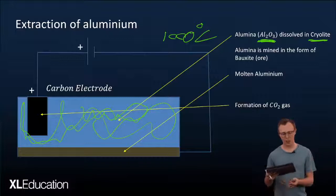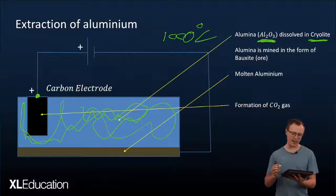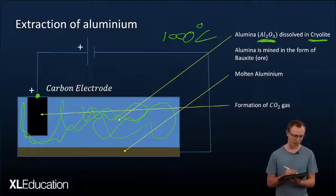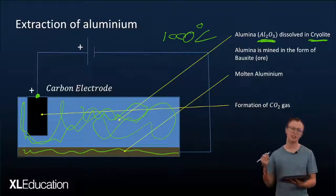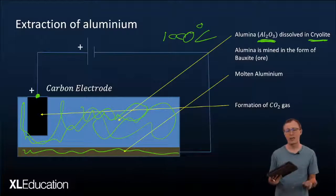So here we've got a carbon electrode and the molten aluminium that forms due to the reduction actually joins at the bottom there and that forms our cathode. So that molten aluminium at the bottom is connected to the external circuit.